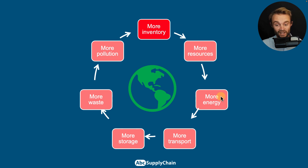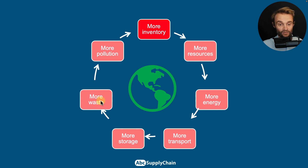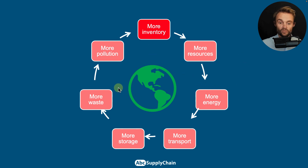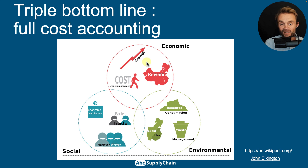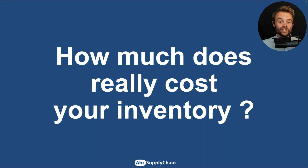The last parameter is the planet impact cost. The more inventory you have, the more resources you use, the more energy you spend moving and transforming those resources, the more you transport, store, and generate waste — packaging, raw materials, and pollution. This is a very bad domino effect. It's not easy to quantify, but one solution is a specific accounting framework that considers social and environmental impact.